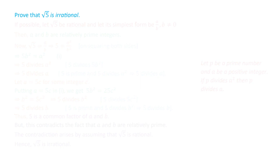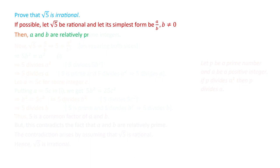The next question is to prove that square root 5 is irrational. Again, we prove it by the method of contradiction. If possible, let square root 5 be rational, and its simplest form is a by b, where b is not equal to 0. Since a by b is in simplest form, a and b are relatively prime integers. So root 5 equals a by b. Squaring both sides, we obtain 5 equals a squared by b squared. Cross-multiplying, we get 5b squared equals a squared. We mark this as equation 1.